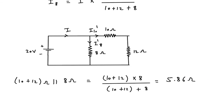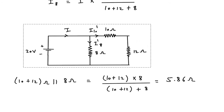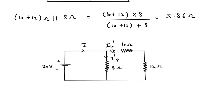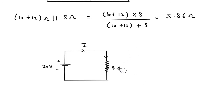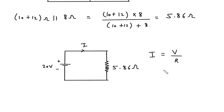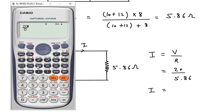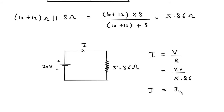We can replace these resistances with a single resistor of 5.86 ohm. Now we can easily find I using Ohm's law: I equals V divided by R. V is 20 volts and R is 5.86 ohm. Therefore, I equals 20 divided by 5.86, which is 3.41 ampere.